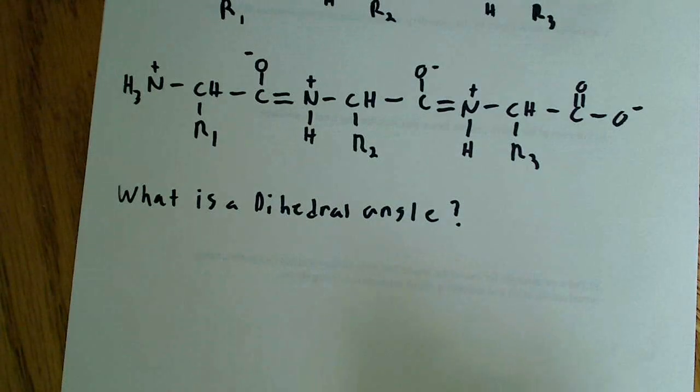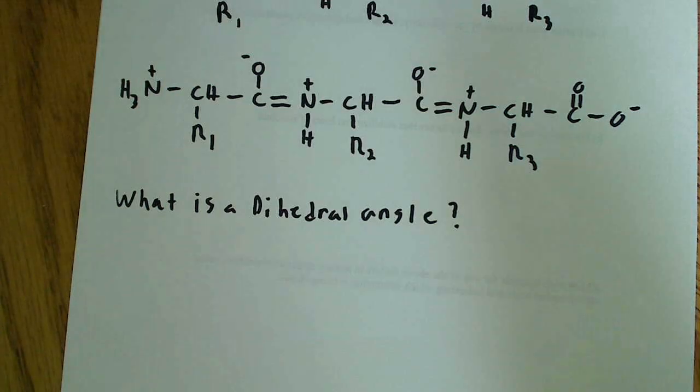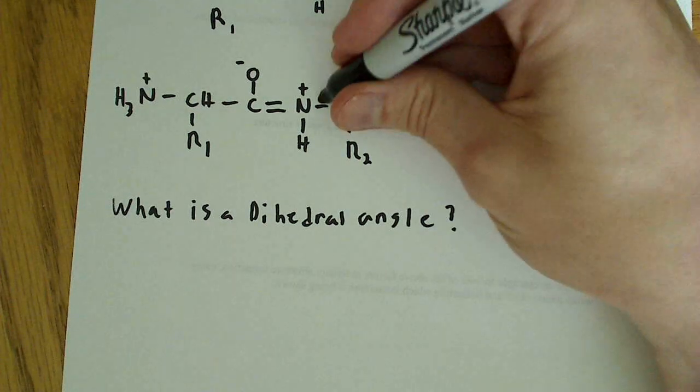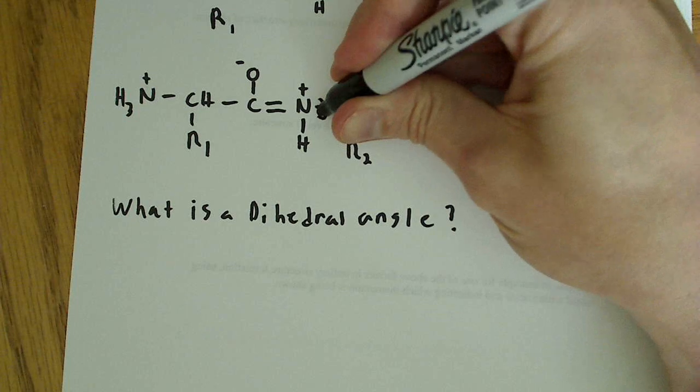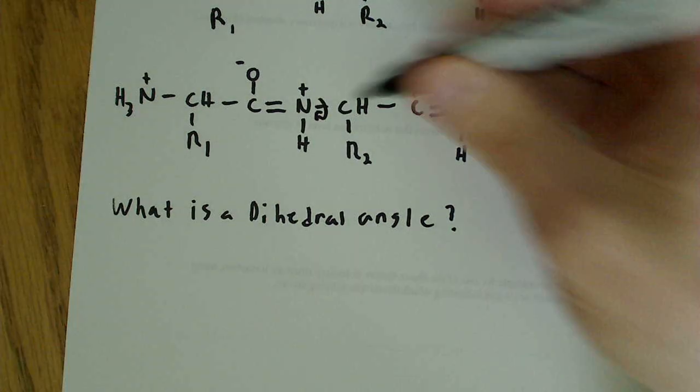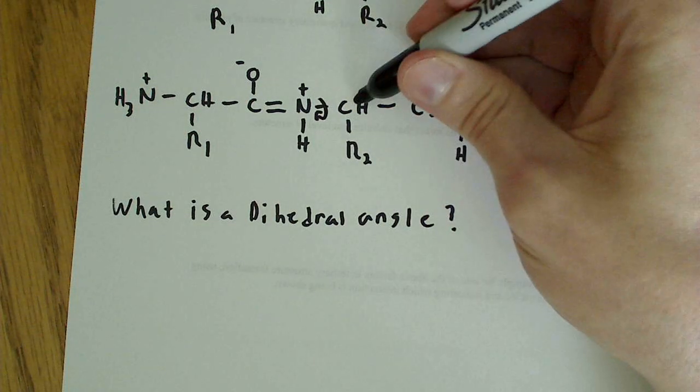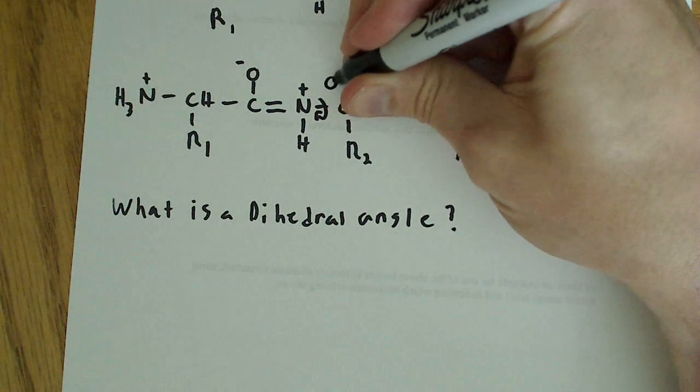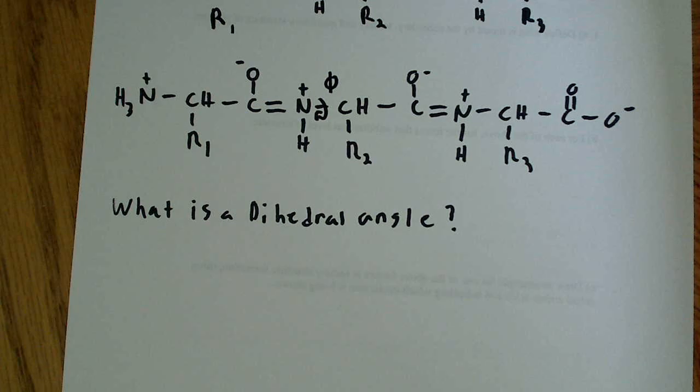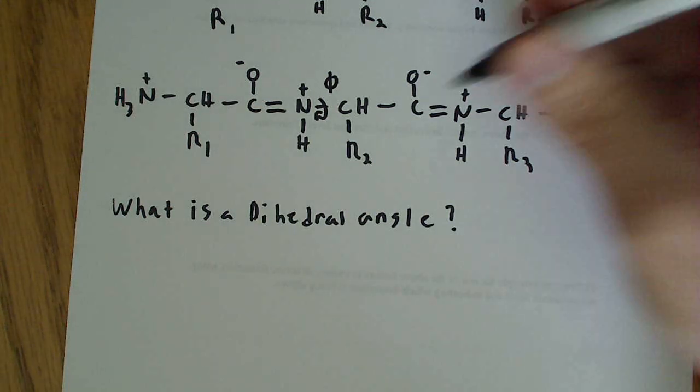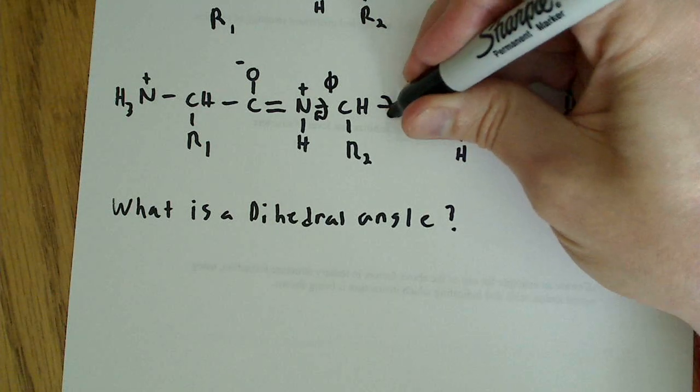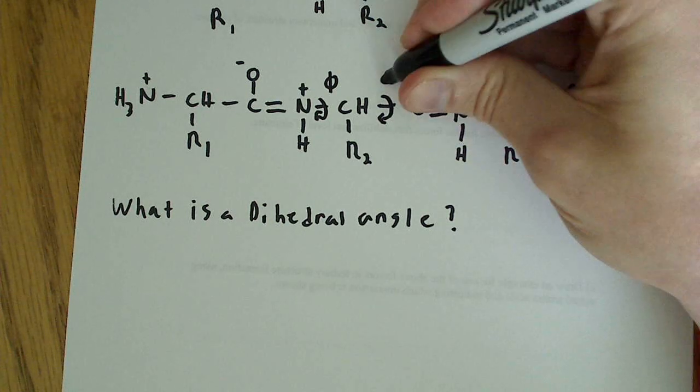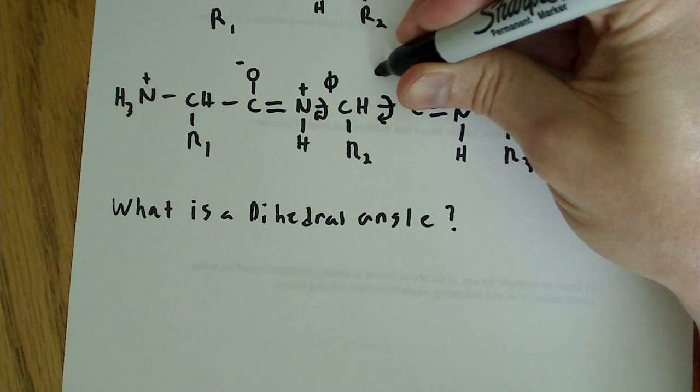So if we're looking at this peptide here, you might say, well, which bonds are those? There's this one here where there's allowable rotation because it's between the N and C alpha. So this is what's known as the phi angle. So I'll draw the symbol for phi there. And then there's also a free rotation around the C alpha C angle. So that would be this one right here.